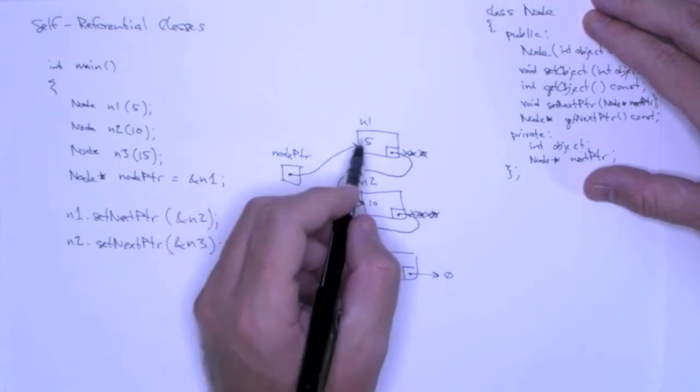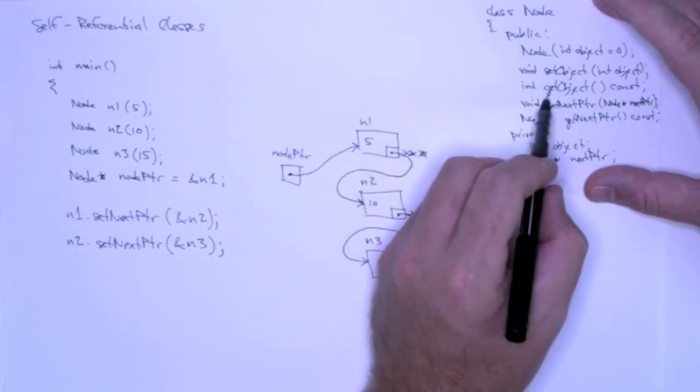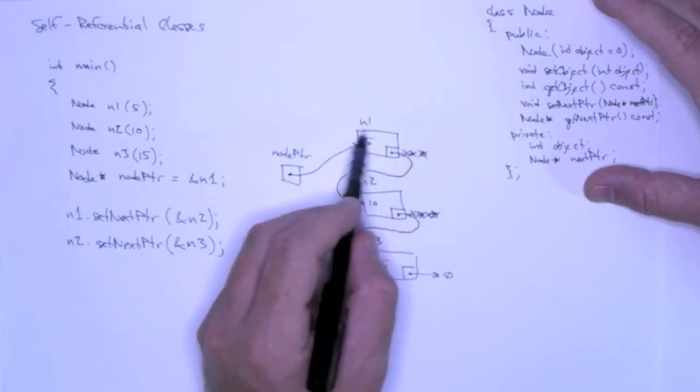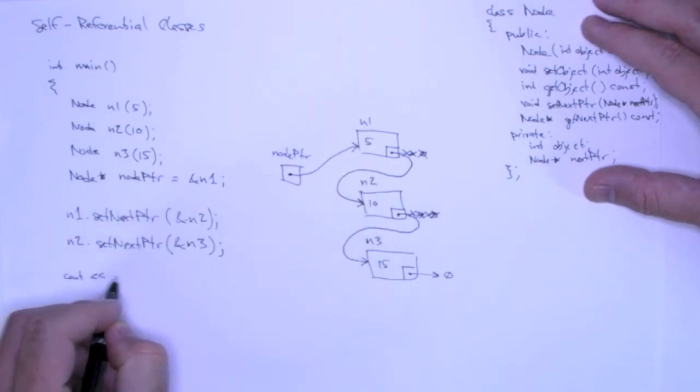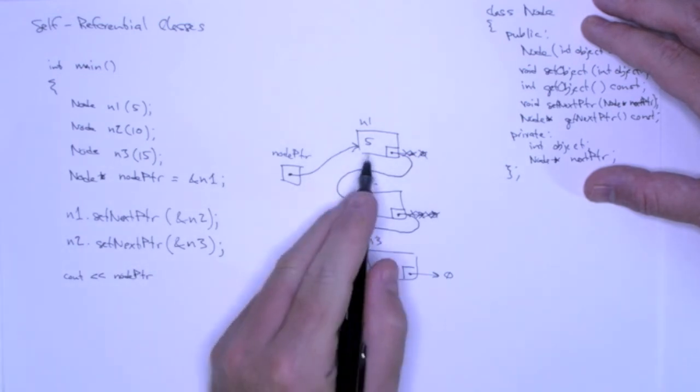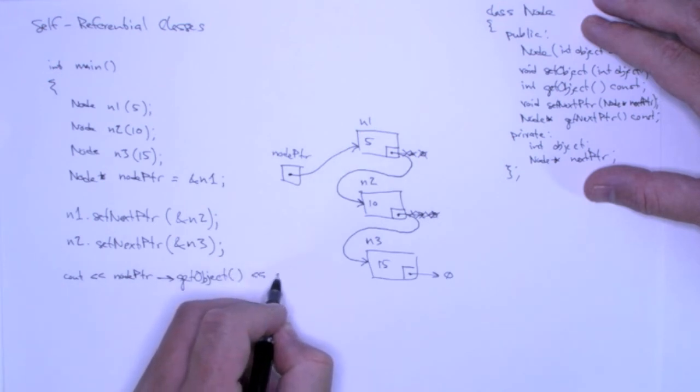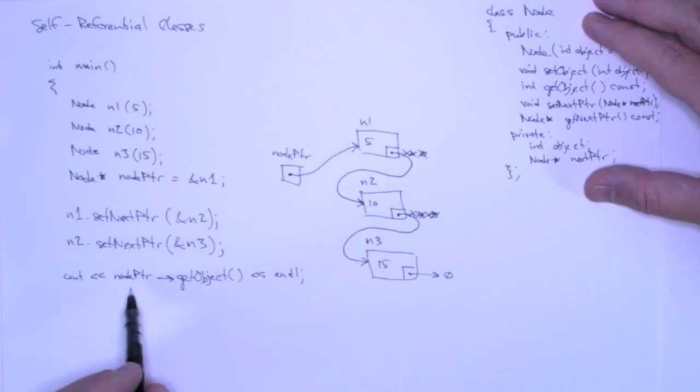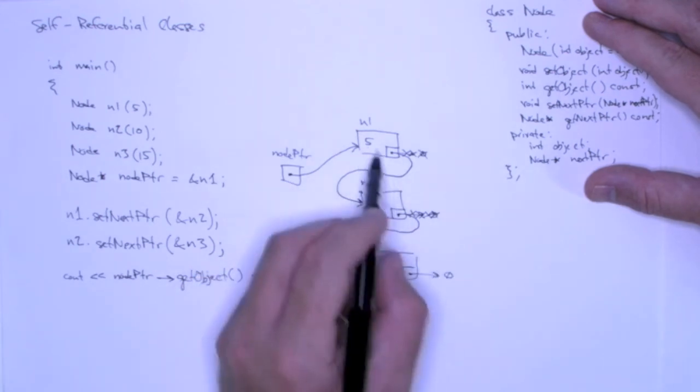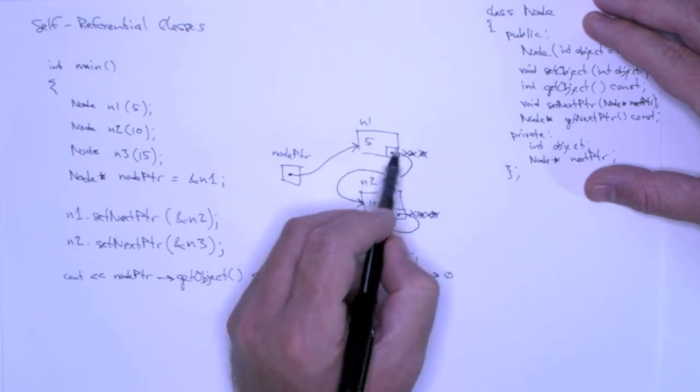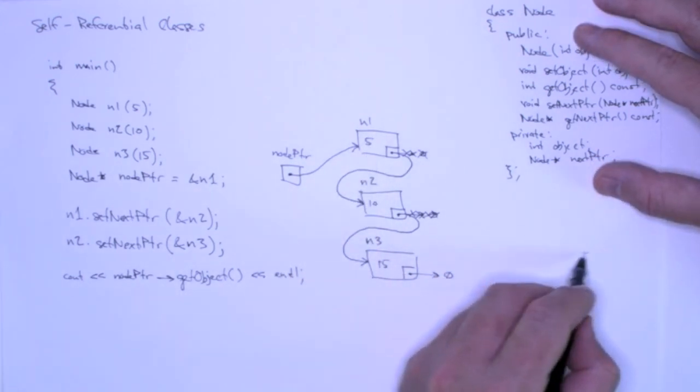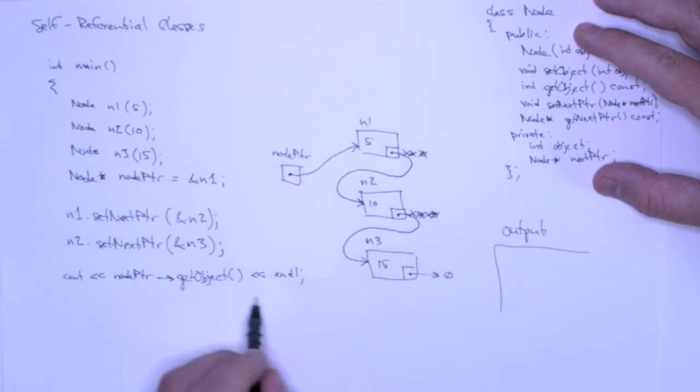And the way that I can do that, what gives me these values 5, 10, and 15? Well, it's the get object method. So I have a pointer to the n1 object. So if I say cout node pointer, and I want to call the get object method, I can do that by using the dereference operator. What this is going to do is call the get object method of the object that the pointer points to. Node pointer points to n1, so get object is calling this get object method for this object, and it returns 5. So in terms of my output, this statement is going to print 5.